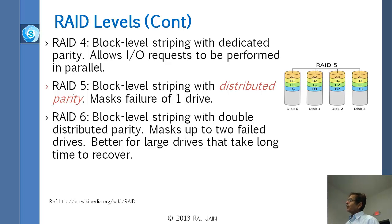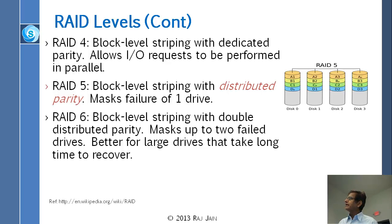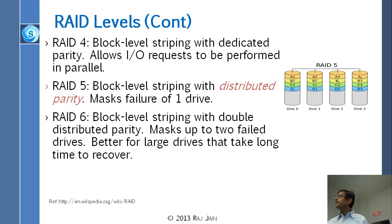RAID 4 is block-level striping — you write a1, a2, a3, then a parity; b1, b2, b3, then a parity — with the parity on a dedicated disk. RAID 5 distributes the parity instead. With distributed parity, if a disk goes away, at least some data can still be read directly. If all parities are on one disk and that disk goes away, everything must be reconstructed. Reconstruction time is lower with distributed parity. Also, parity is more efficient than mirroring — mirroring is 50% overhead, while parity could be 20%, 13%, or 10% overhead depending on how many disks you use.